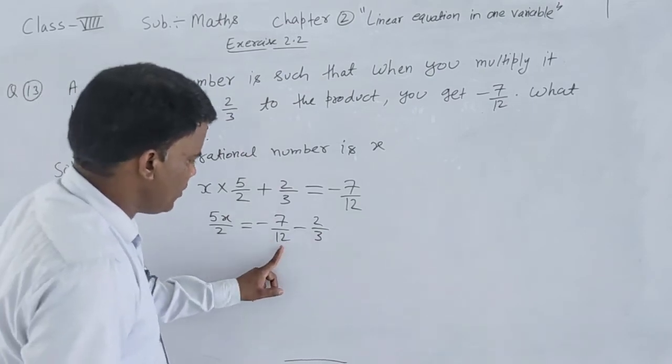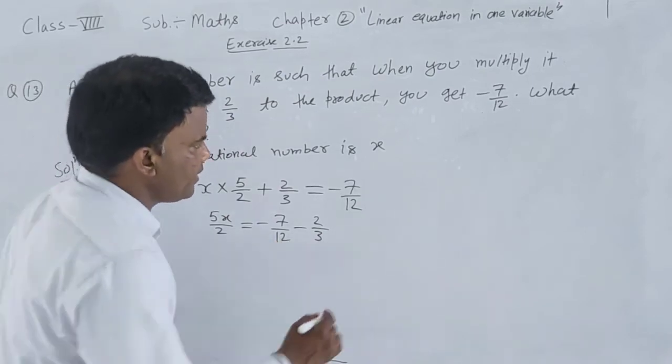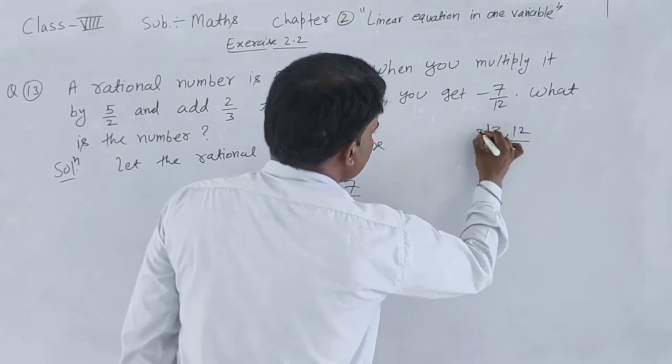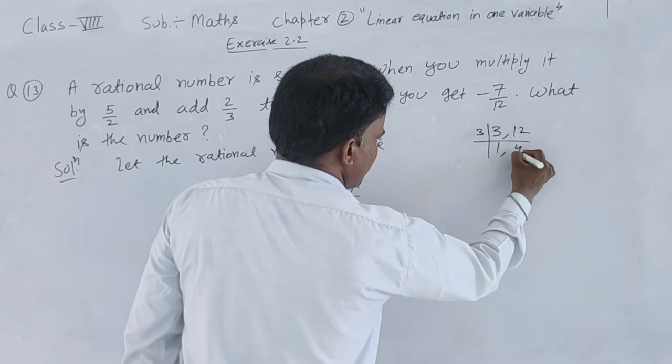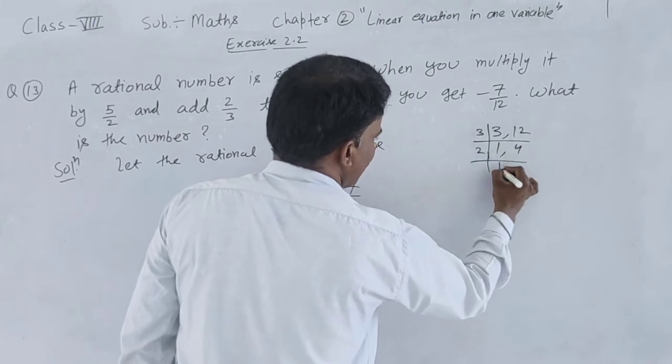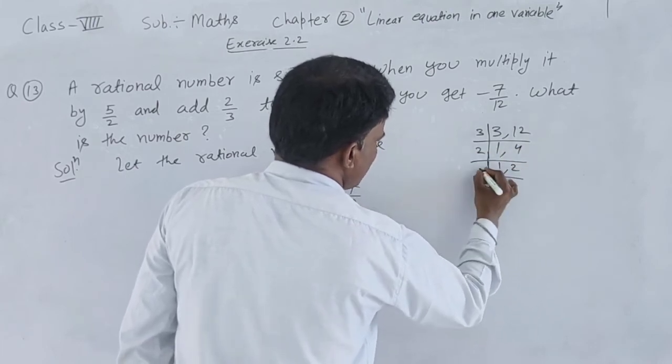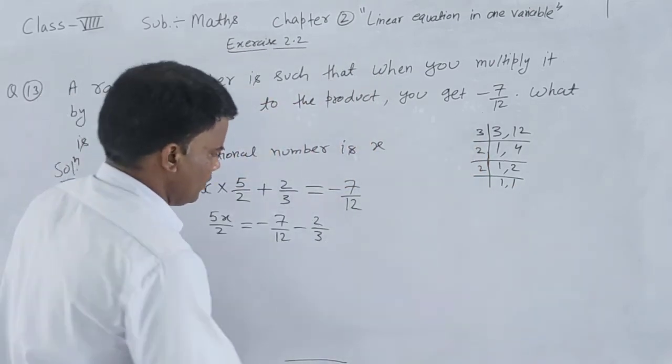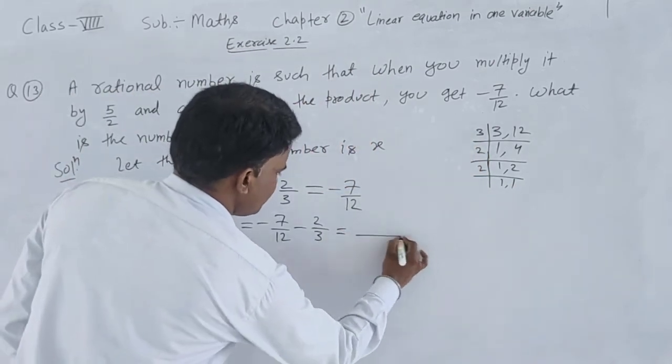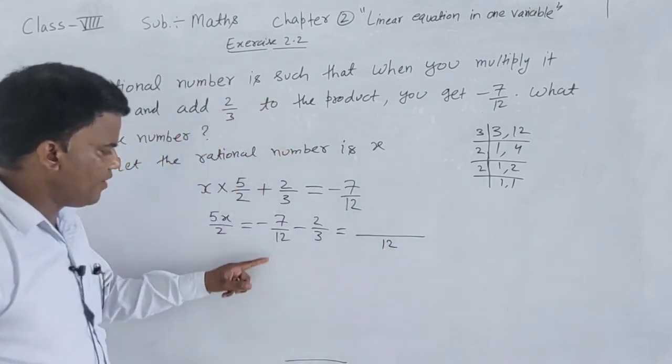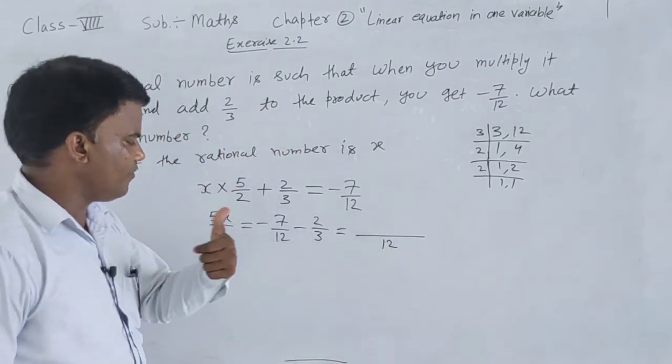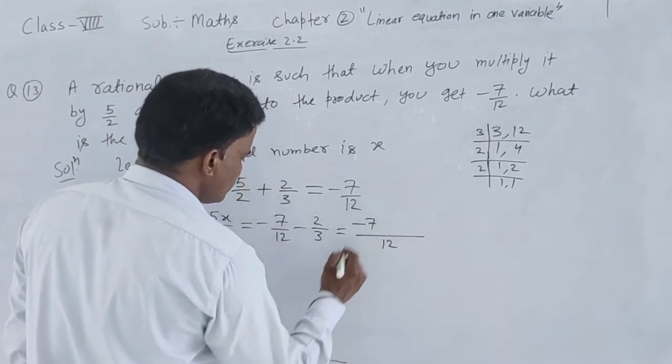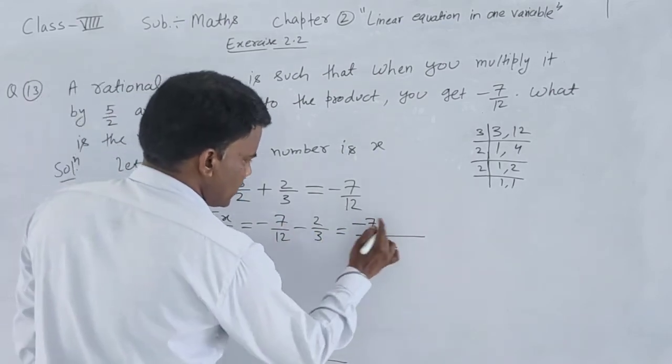Transfer minus 2 upon 3. Denominator 3 and 12. Take LCM. 3 goes into 12 four times. So we have 12 as denominator. 12 divided by 3 is 4. 4 times 2 is 8. Minus 7. Minus 7 into 1 is minus 7. Minus sign.